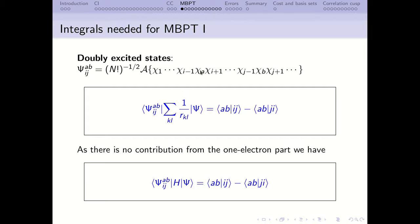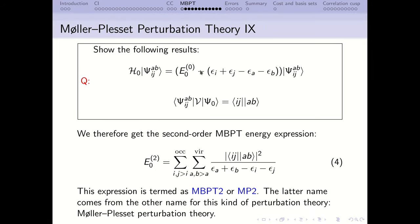We then went on to perturbation theory and looked at second-order perturbation theory, MP2 or MBPT2. MBPT stands for many-body perturbation theory and MP stands for Møller-Plesset, two of the authors. The MP2 energy has a very simple expression: it is given as a sum over states with energy differences in the denominator. The A's and B's refer to virtual energy levels, the I's and J's to occupied. In the numerator we have the Coulomb integral IJAB minus the exchange integral IJBA.